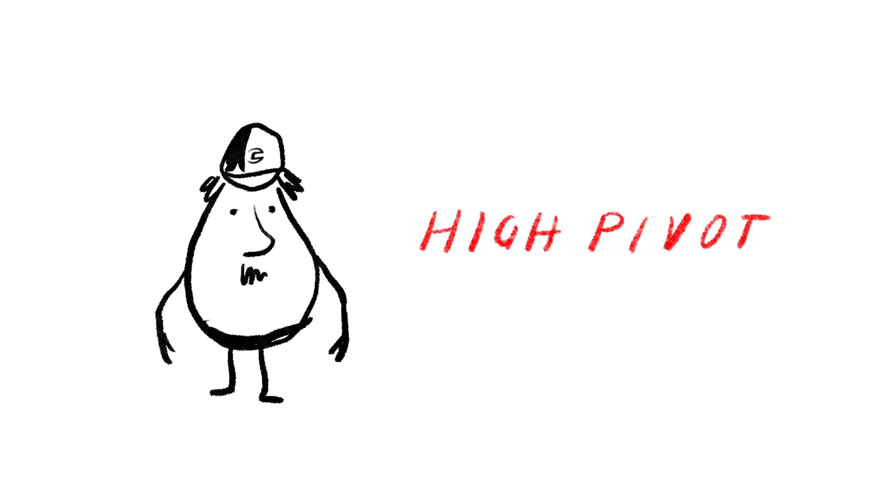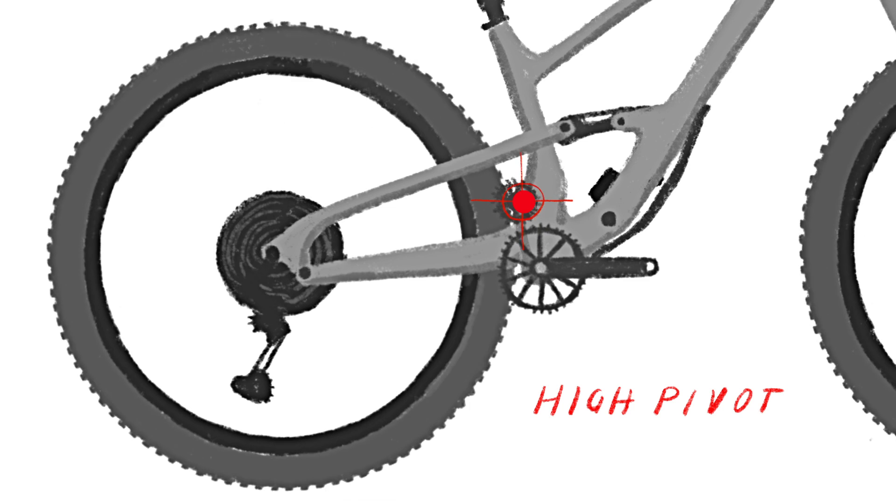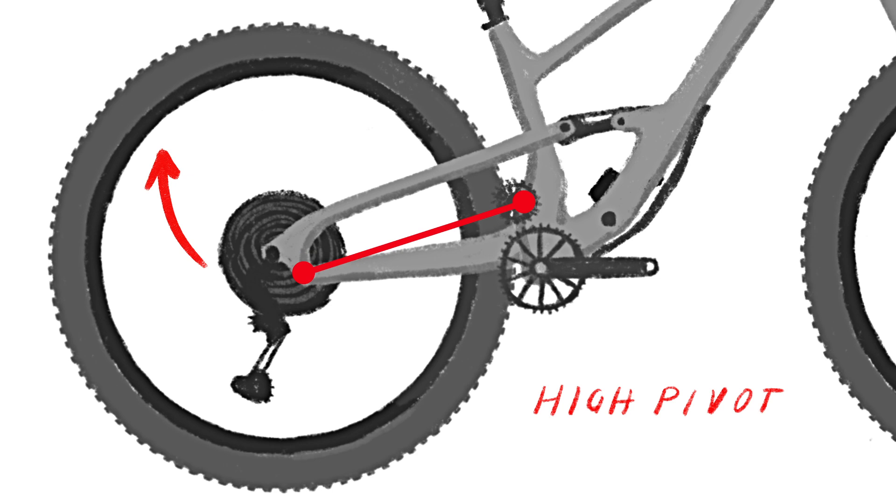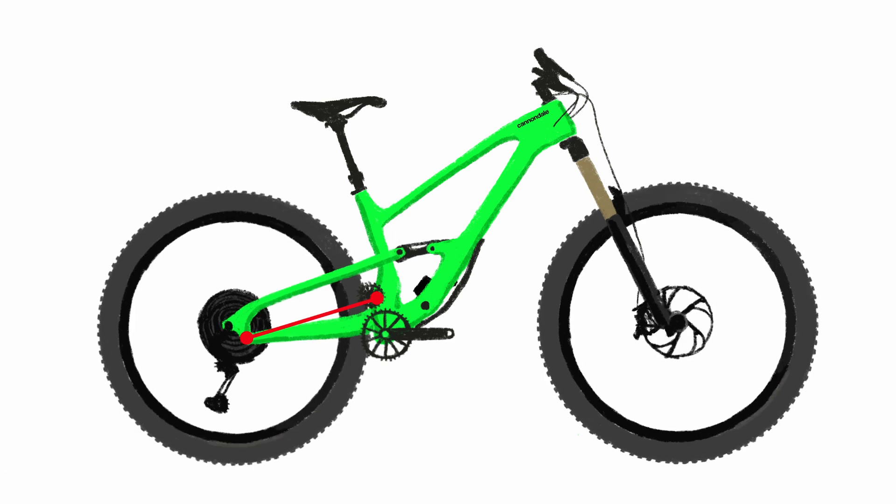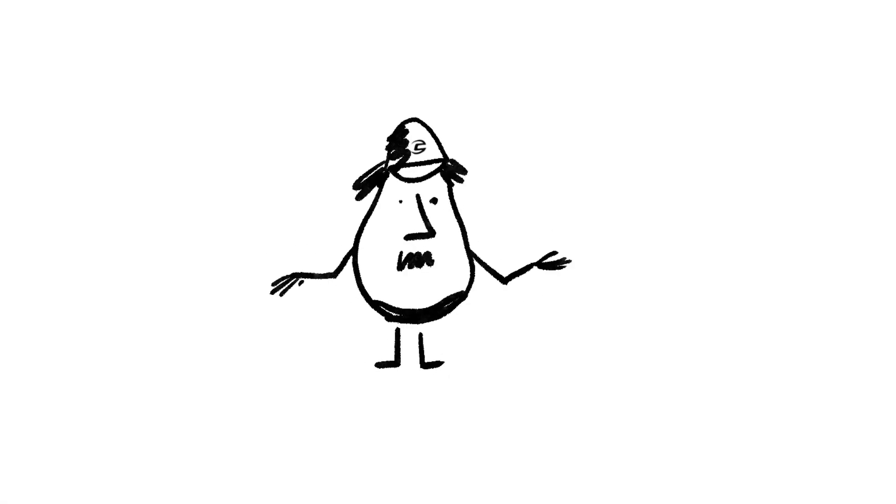Next up, the high pivot. On the Jekyll, the swing arm pivots up here, high on the seat tube. With the pivot up high like this, the wheel moves backwards and up when it encounters a bump, letting your momentum carry smoothly on instead of hanging up as your wheel tries to go up and over the obstacle. It just makes it easier to go faster.